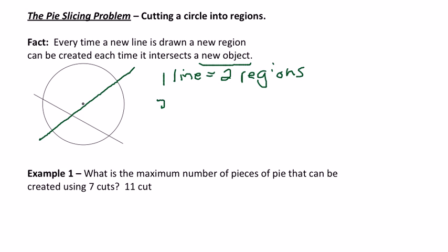And so now two lines give me four regions, because I created two new ones, and I had two.